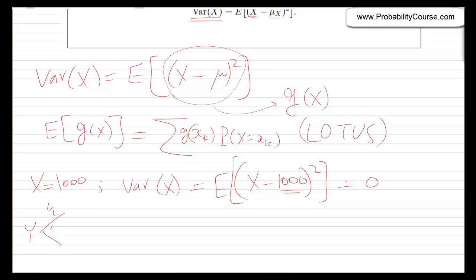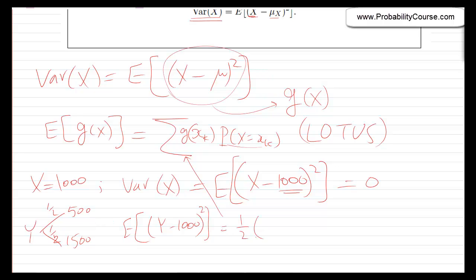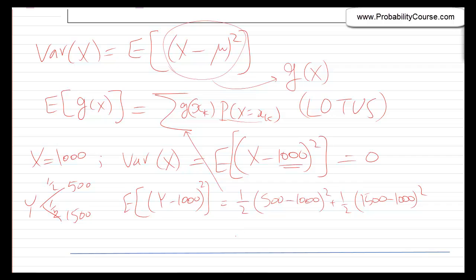For y, which has two possible values — 500 and 1,500 — the variance is E[(y − 1,000)²]. Using LOTUS: (1/2)(500 − 1,000)² + (1/2)(1,500 − 1,000)² = 250,000. So the variance of x is 0, but the variance of y is 250,000. We can now clearly distinguish the two investments.